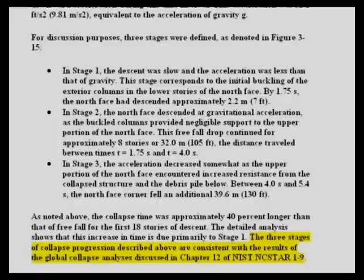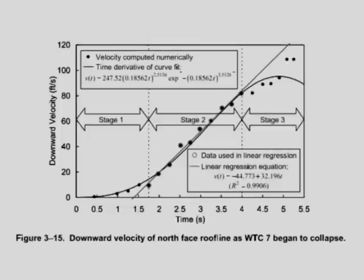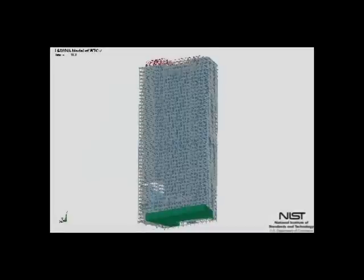Let's come back to NIST's acceptance of free fall. Their exact wording: 'The three stages of collapse progression described above are consistent with the results of the global collapse analysis discussed in Chapter 12 of NIST NCSTAR 1-9.' But the 5.4 seconds depends on an artificially early start time with no valid observational basis. Without the 5.4-second fig leaf, they are left with free fall and nothing more. NIST does not show how free fall is consistent with their hypothesis because, as Shyam Sunder correctly explained, free fall for a naturally collapsing building is impossible.